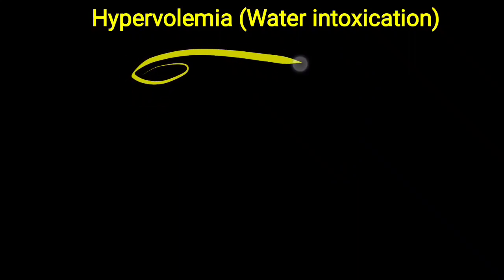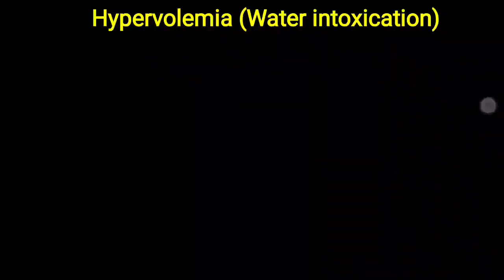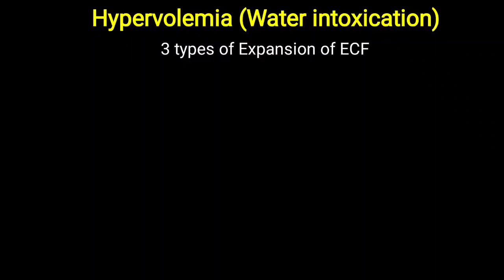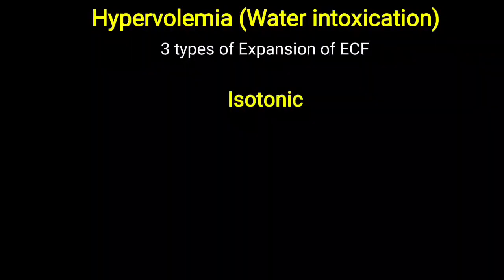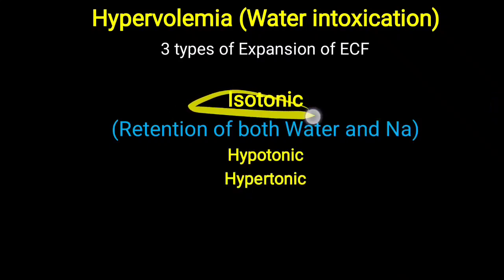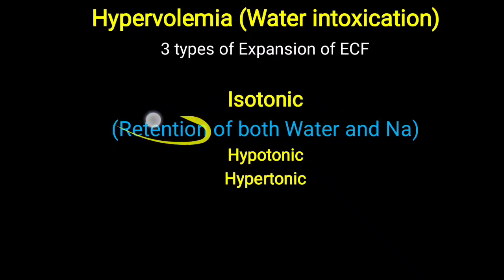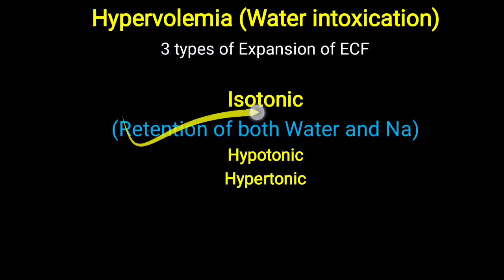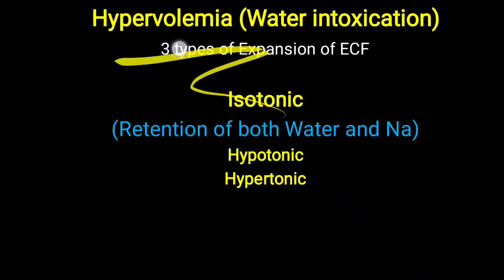To understand hypervolemia, it is divided into three varieties based on osmolality. There are three types of expansion of extracellular fluid: isotonic, hypotonic, and hypertonic. In isotonic expansion, the osmolality of the plasma remains the same — it is not altered — because retention of both water and sodium is observed.